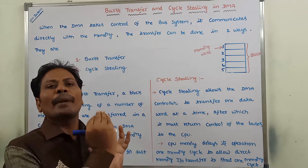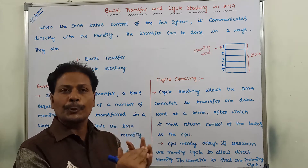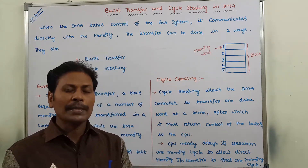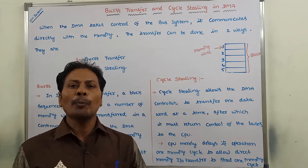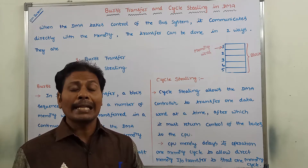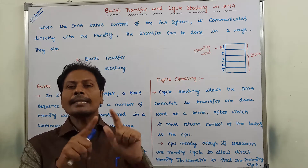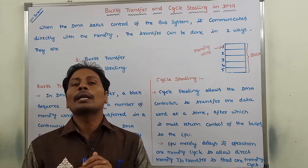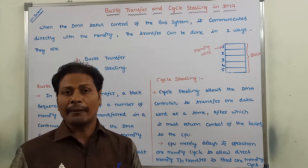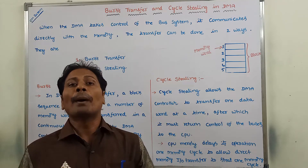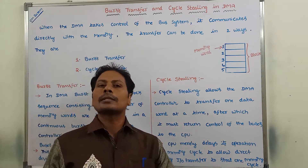How can DMA transfer be done from an IO peripheral device to the main memory? What are the steps we have to follow? The first step is: the IO peripheral device sends a DMA request to the DMA controller. Once the DMA controller receives the DMA request, it activates the bus request line and sends it to the CPU.